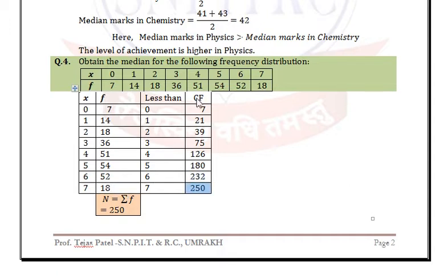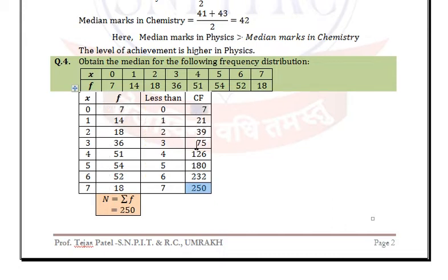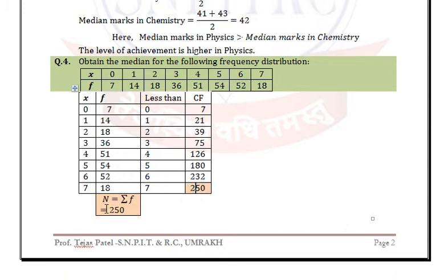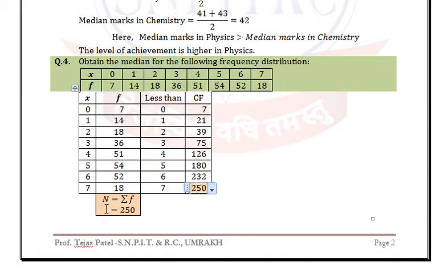In less than cumulative frequency form, the last value equals summation f, which equals capital N. Now the first step is to find the cumulative frequency just greater than N/2.